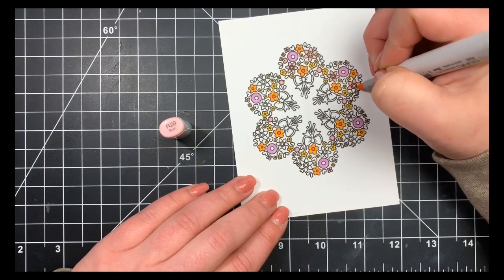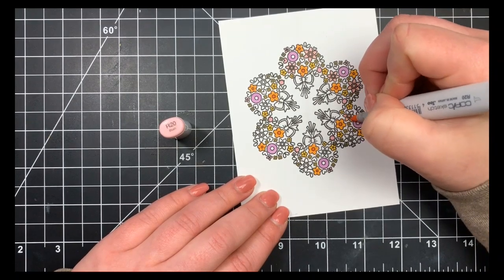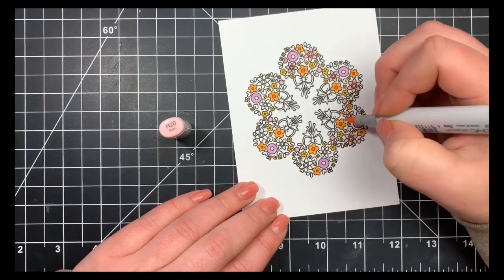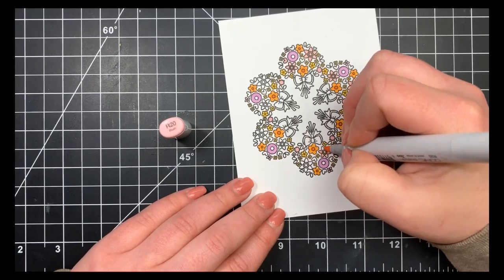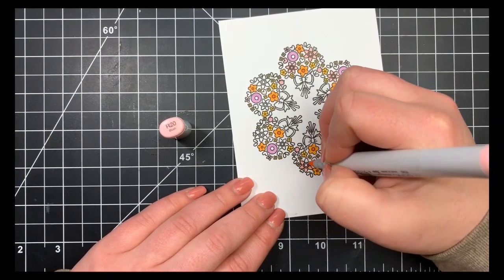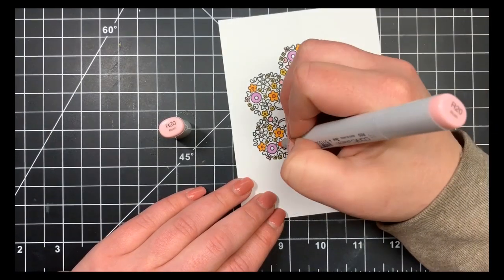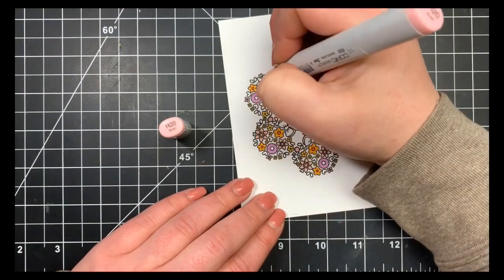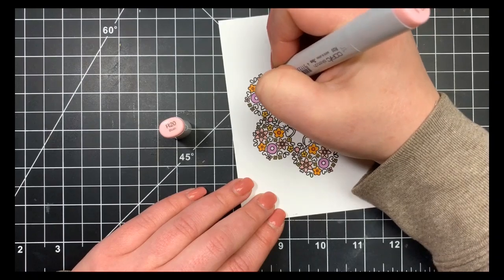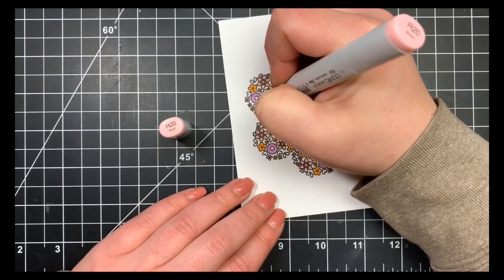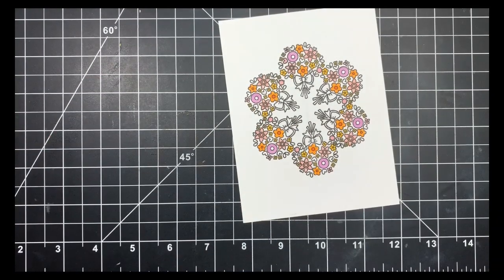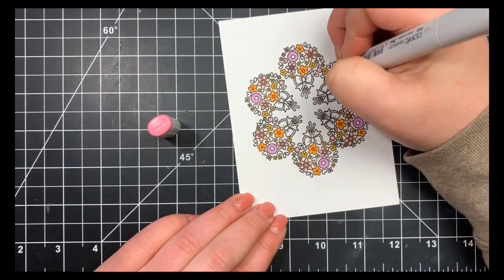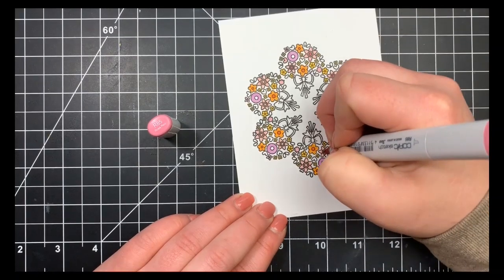Moving on to these next flowers, these larger flowers, I'm coloring in the entire thing, going directly over the center part of the flower. I'll fill that in with a darker color in a minute just because it's a larger area. For the teeny tiny ones, I didn't bother.